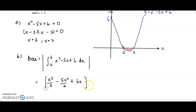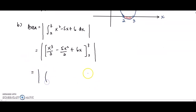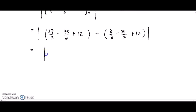We substitute the upper and lower limits into two brackets. Substituting 3 gives 27 over 3 minus 45 over 2 plus 18. Substituting 2 gives 8 over 3 minus 20 over 2 plus 12. Calculating gives negative 1 over 6, and the modulus sign converts it to positive. The final answer is 1 over 6 unit squared.